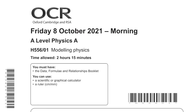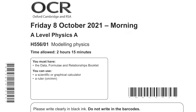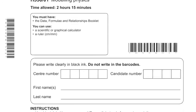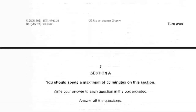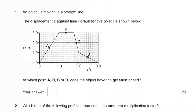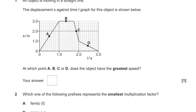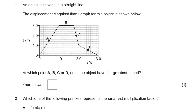Here's OCR 2021 A-Level Physics Paper 1, Modelling Physics. Unlike AQA, I can show this paper on screen because OCR are fine with it. Let's go — multiple choice first, which is my favorite.